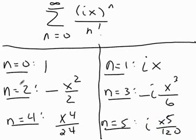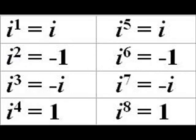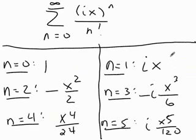Now, as you can see, when n is even, I'm getting real number coefficients, because all the even powers of i are either plus or minus 1. With the odd exponents, the odd n's, I'm getting a factor of i each time.